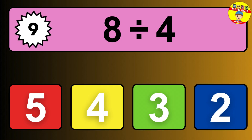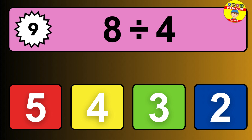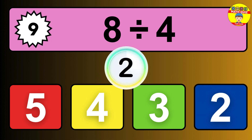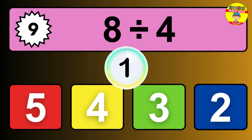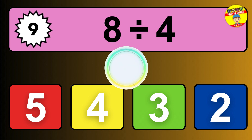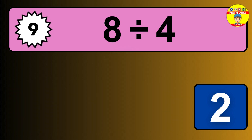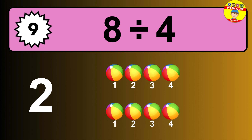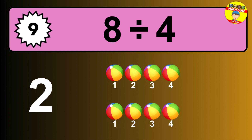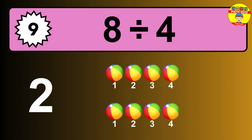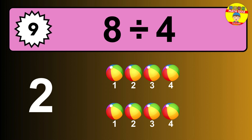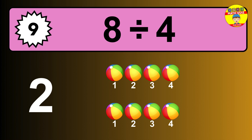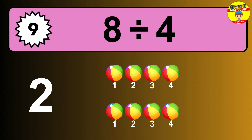8 divided by 4 is... time to think. Let's go to the solution. Divide the number 8 by 4. Each group contains 4 units. So dividing 8 by 4 results in 2 equal groups. Thus, the result is... 8 divided by 4 equals 2.